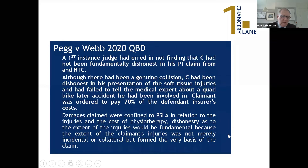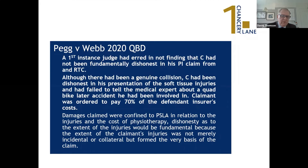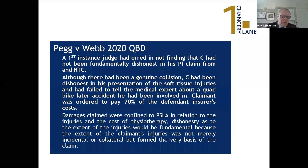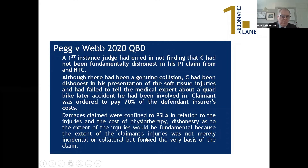In Peg and Webb from the Queen's Bench Division, there was a genuine collision but dishonesty in the presentation of soft tissue injuries, and the claimant failed to tell medical experts about a subsequent quad bike accident. Even though the damages were limited to pain, suffering and loss of amenity, the work of the solicitors — looking at records, comparing the timing of different events, teasing out that there had been another collision, and then making sure medical experts were properly informed about the timeline — persuaded the court that there was fundamental dishonesty. Seventy percent of costs were ordered.